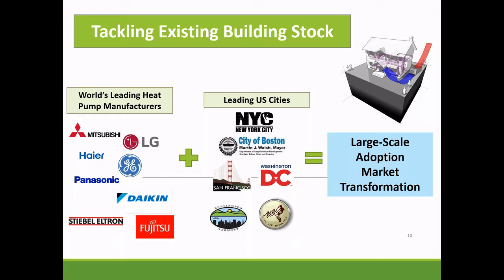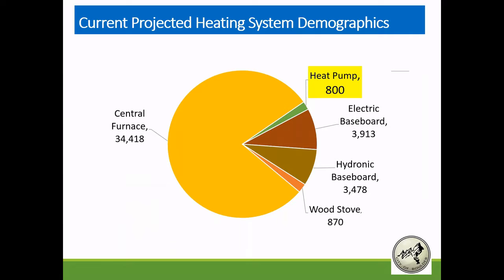We started our launch with Mitsubishi. In our case, we didn't do a bulk community purchase, but we did partner with Mitsubishi to offer additional incentives, and they also did quite a bit of marketing. Our community's heating stock is currently dominated by central forced-air furnaces, with a small percentage of electric baseboard, hydronic baseboard, wood stoves, and only a small amount of existing heat pump adoption.